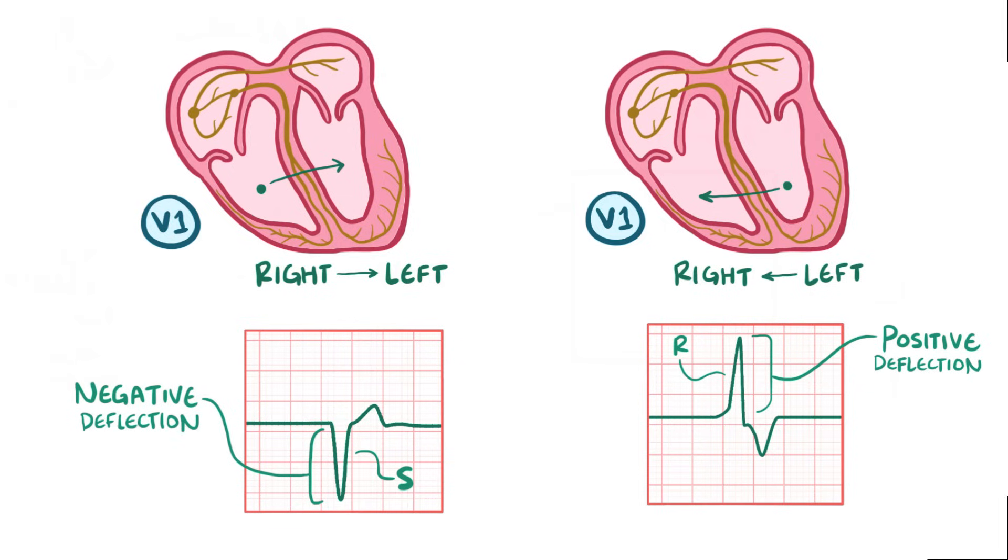Regardless of the originating ventricle, a premature ventricular contraction often has an abnormal T wave, since the timing and direction of repolarization will be abnormal as well.